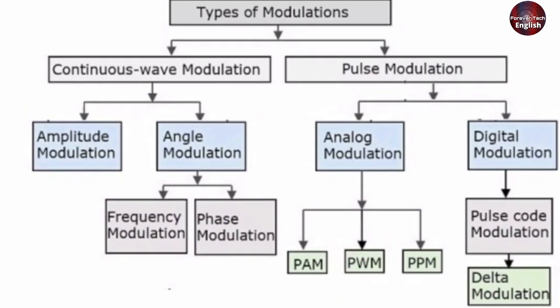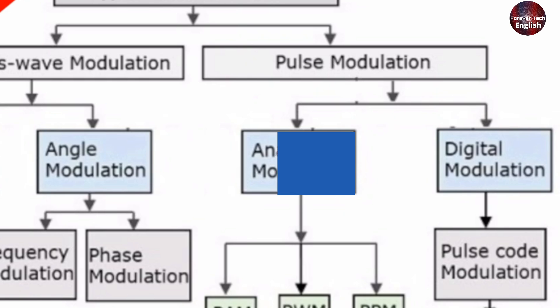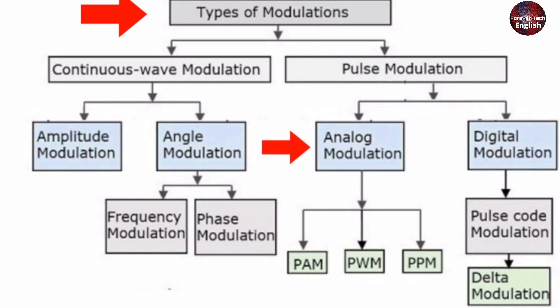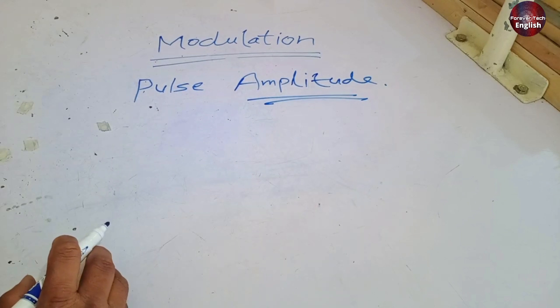Now let's look at the types of modulation. We can't cover everything, but our main topic will be analog modulation. And within analog modulation, we will talk about PAM, which is pulse amplitude modulation. That will be our focus today.